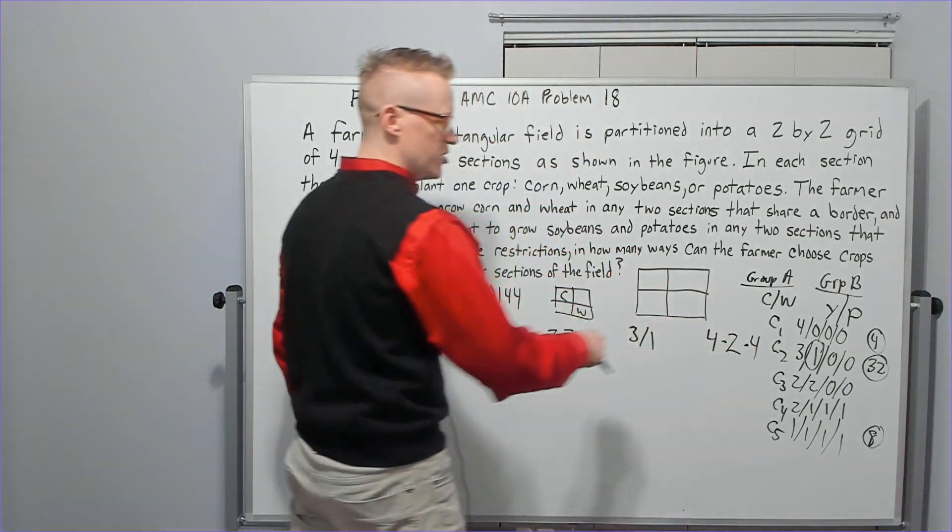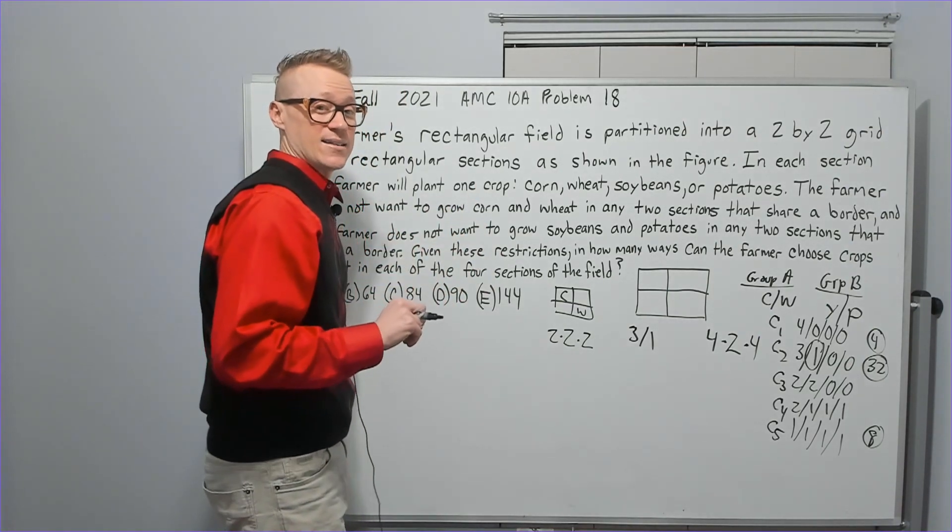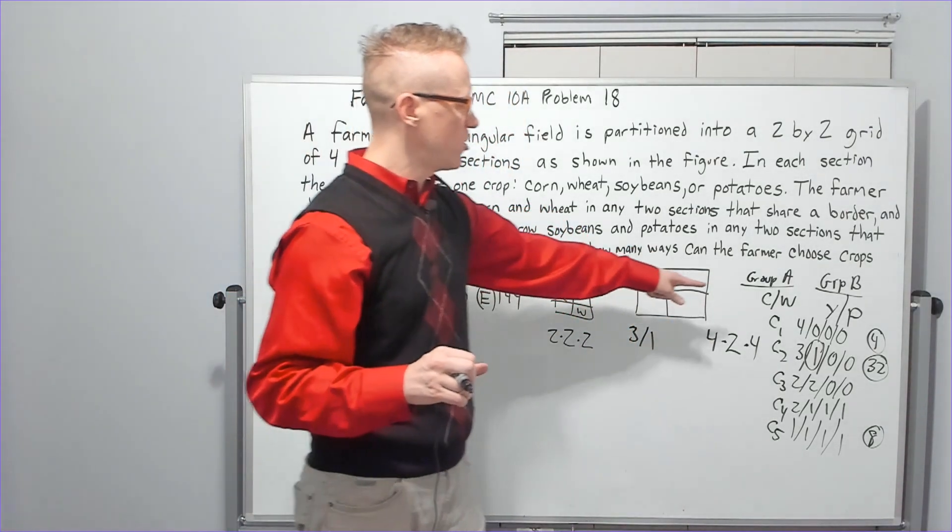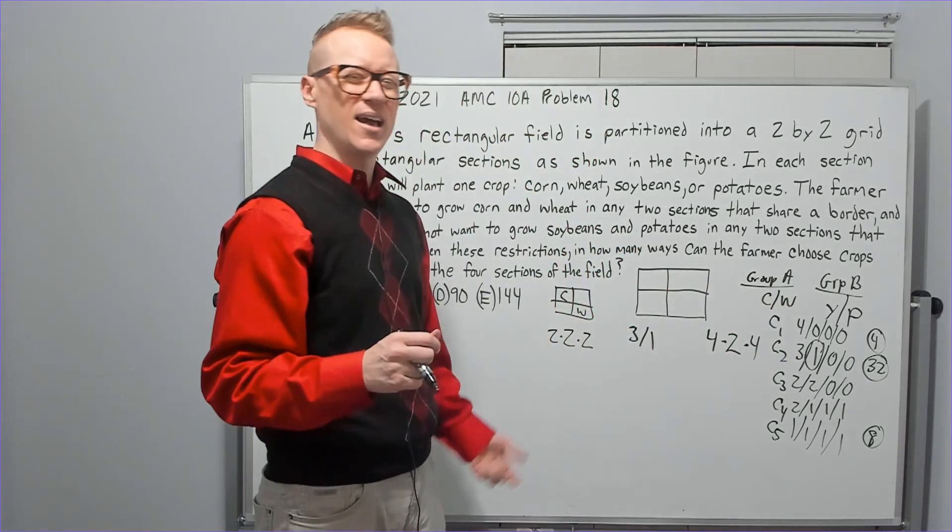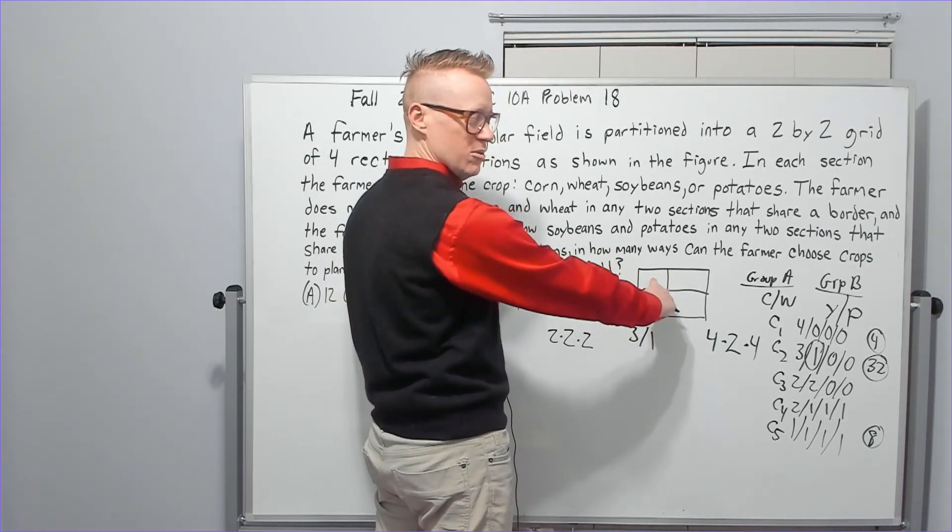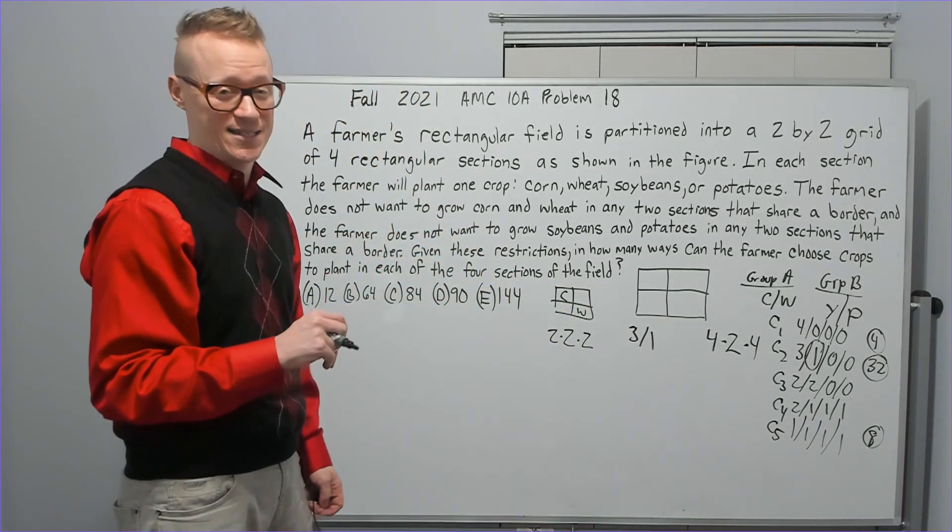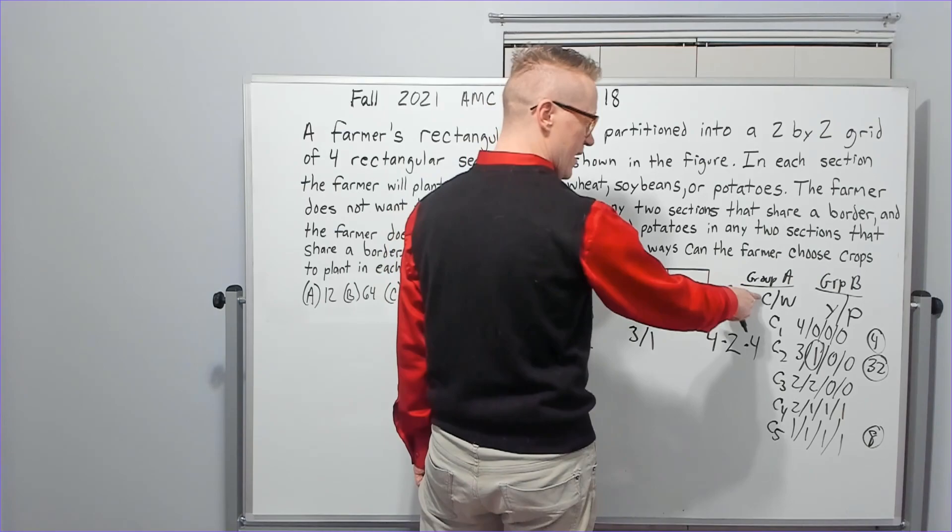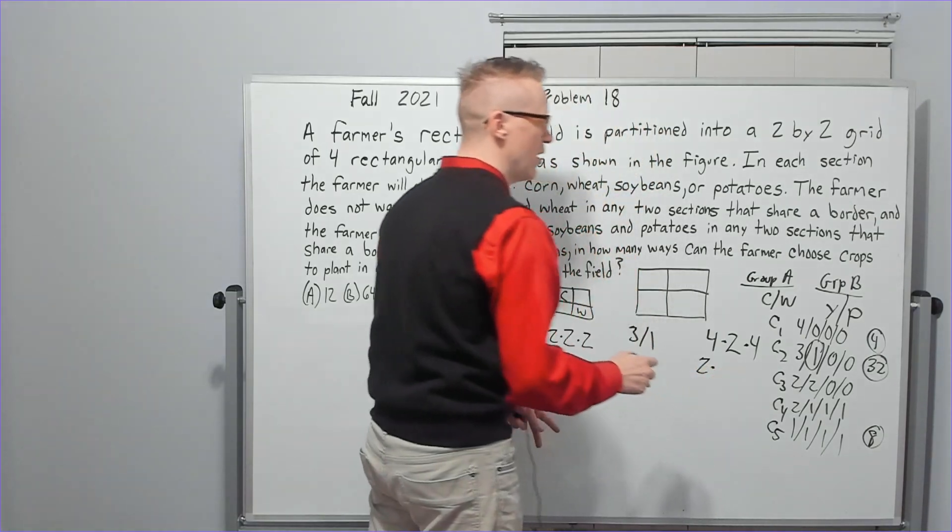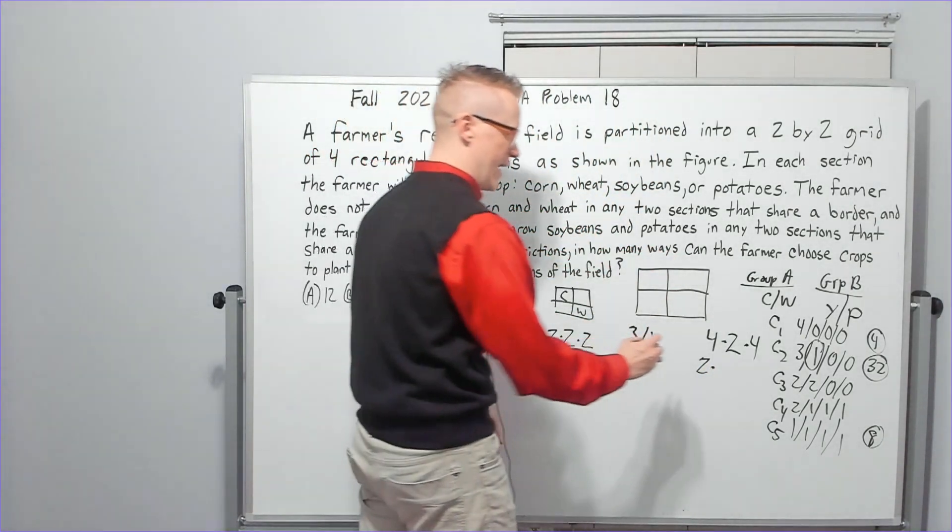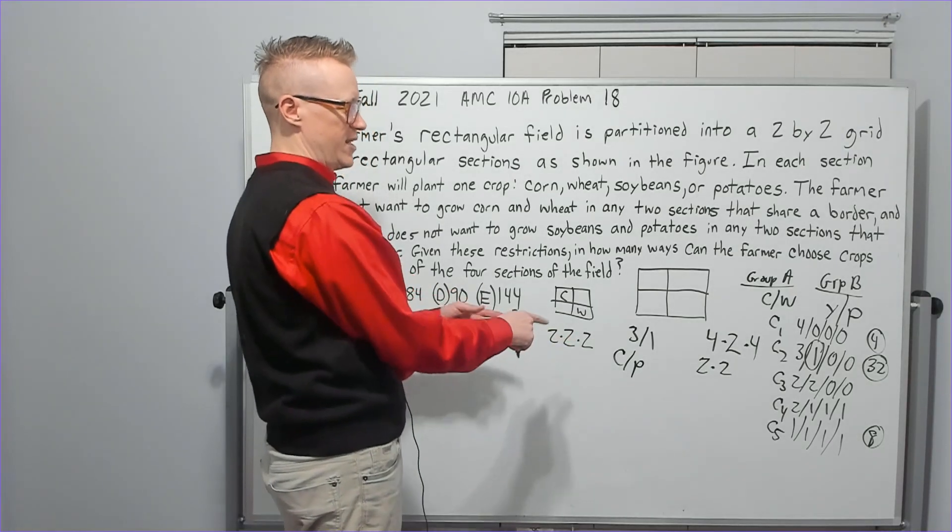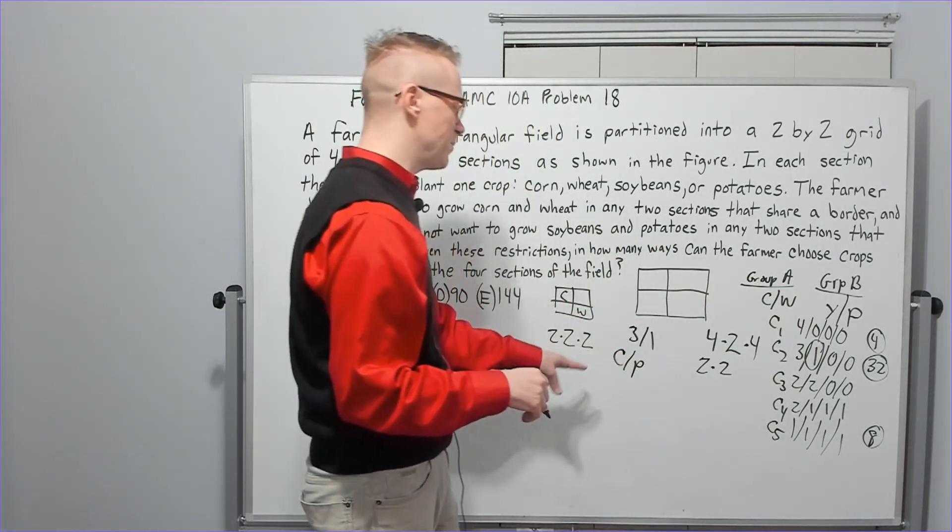So case three, the 2, 2, 0, 0. So now we're going to have to have sub cases. If I chose the corn and the wheat, let's see if I had corn and wheat as my two and two, how could I arrange them? Could I put the two corns here? Nope. Could I have the two corns catty corner? Nope. Could I have the two corns here? Nope. So we don't really have sub cases. You're going to have to pick one of the two crops from group A. That's going to be two choices. I put a two times one of the crops from group B. That's two choices. Again, for the sake of argument, let's say I chose corn and potatoes again. So these don't have any restrictions because they're not in the same group.